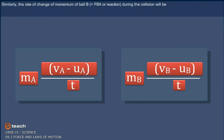Similarly, the rate of change of momentum of ball B, equal to FBA reaction, during the collision will be MB(VB minus UB) divided by t.